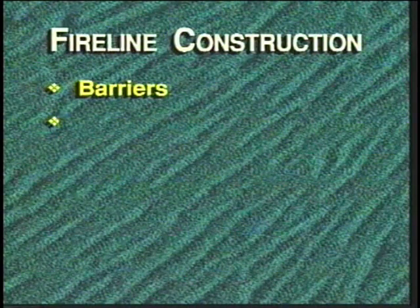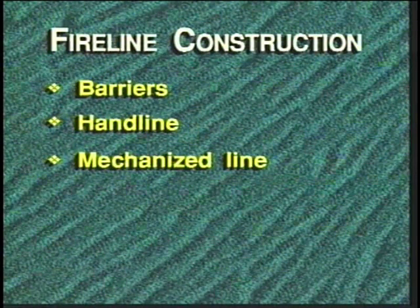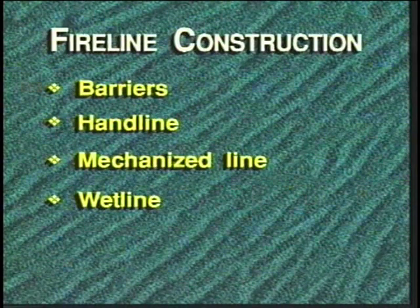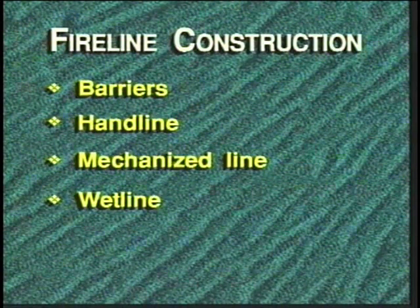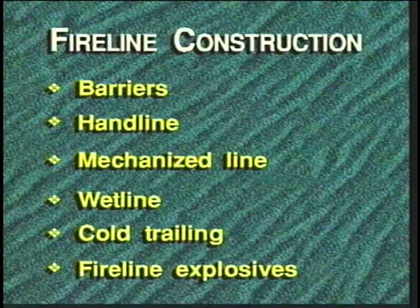In conjunction with line location, crew bosses must take into consideration the type of fire line to be utilized. There are six basic types of fire line. Fire line can be constructed by using one or a combination of the following barriers: natural and constructed hand line, mechanized line which utilizes dozers, plows, and other types of mechanized equipment, wet line which utilizes ground and air delivery systems, cold trailing which utilizes the cold edge of a burned out fire, fire, and fire line explosives. Hand crews may be utilized in conjunction with all six types.